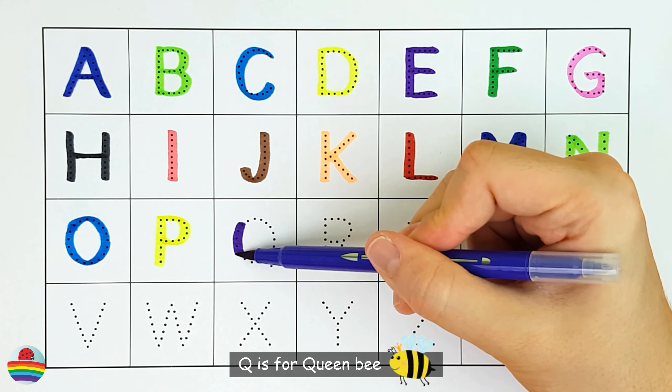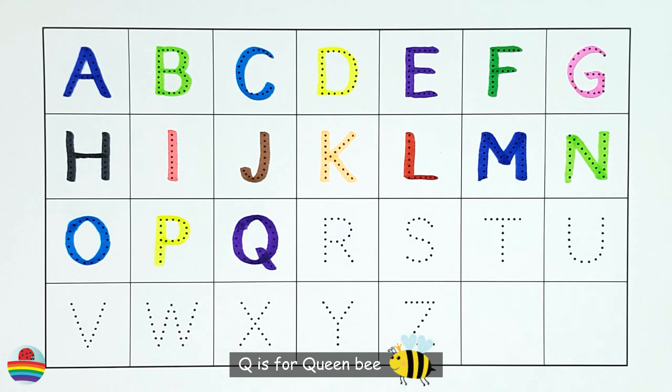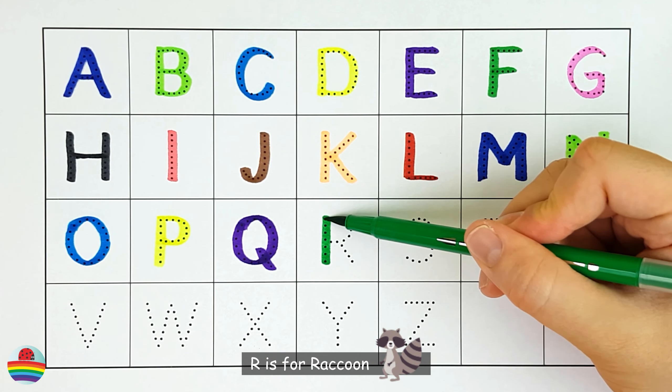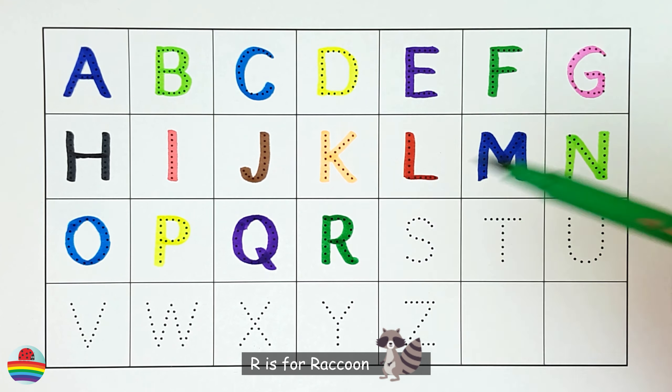Q. Q is for queen bee. Q. R. R is for raccoon. R.